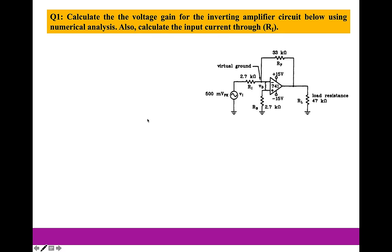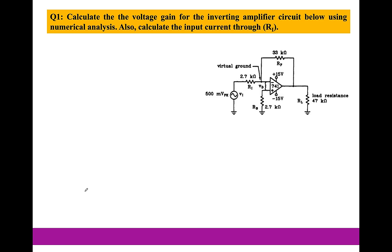I will start by saying that this is an inverting operation amplifier circuit. This setup is inverting because we have the negative terminal of the operation amplifier connected to the input voltage, while the positive terminal is connected to the ground. So this setup is what we mean by an inverting operation amplifier circuit.